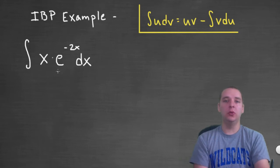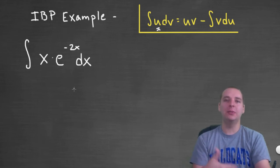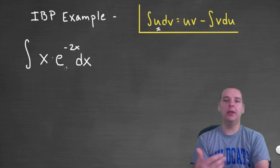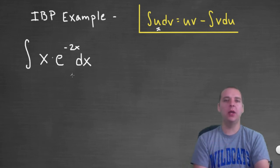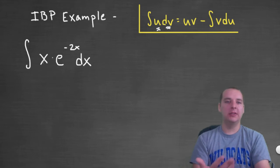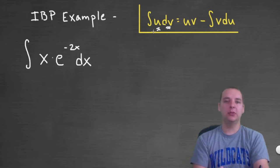Step one is to figure out who's u and who's dv. The u is typically chosen as somebody who's easy to differentiate and preferably gets simpler as we differentiate. The derivative of x would be 1 — I like that. The derivative of e to the minus 2x is negative 2 e to the negative 2x; I can take that derivative, but it doesn't get any smaller. For dv, it needs to be easy to integrate. I can integrate both, but the deciding factor is that u should be getting smaller or simpler.